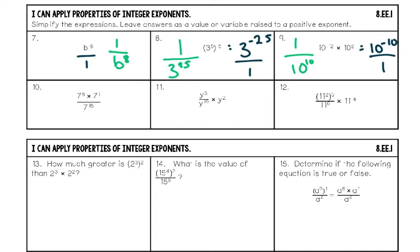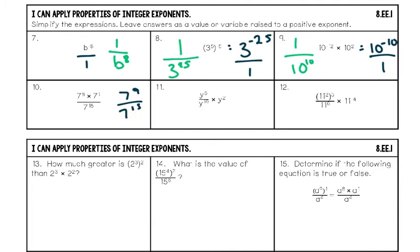Number ten, broken into two problems. On the top floor, it's the product rule: same base 7 being multiplied, so add the exponents — 7 to the ninth power on top and 7 to the fifteenth power on the bottom. Now apply the quotient rule: same base being divided, subtract the exponents. Fifteen minus nine is six, and since there are more sevens on the bottom, the answer stays on the bottom. Final answer: one over 7 to the sixth power.